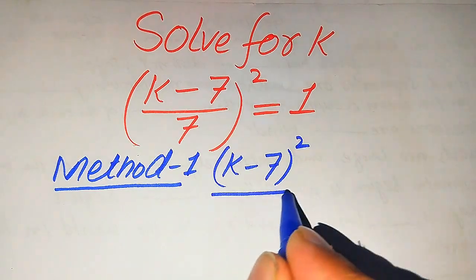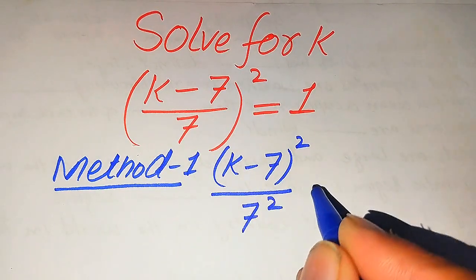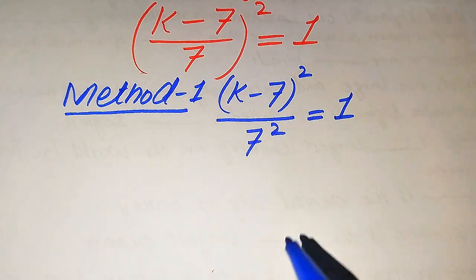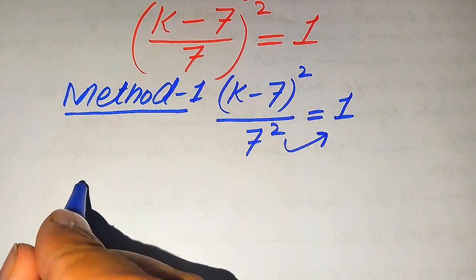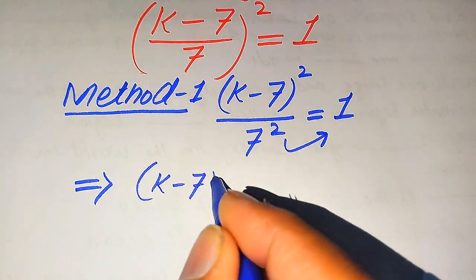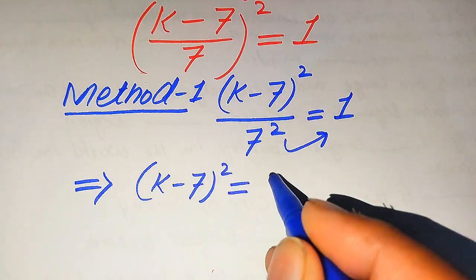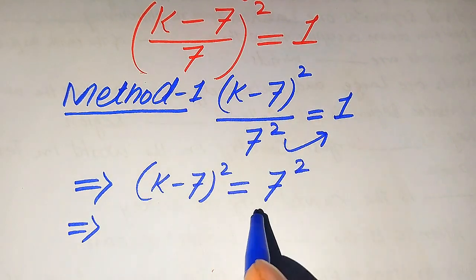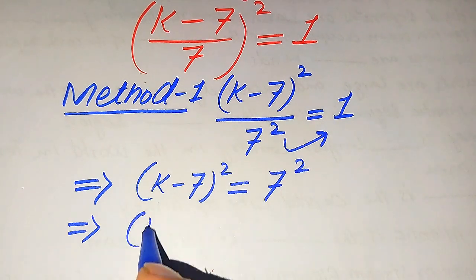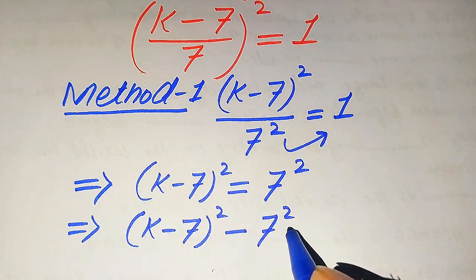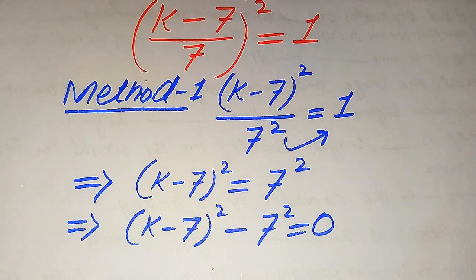After the separation of the square sign, we get (k minus 7) whole square divided by 7 squared, equals 1. In the next step, we move 7 squared to the right-hand side, giving us (k minus 7) whole square equals 7 squared. Then we move 7 squared back to the left-hand side, so (k minus 7) whole square minus 7 squared equals 0.